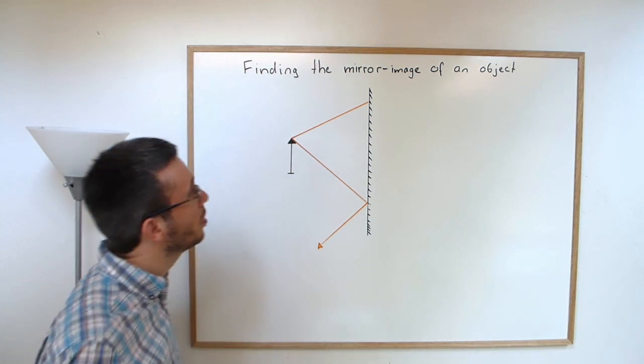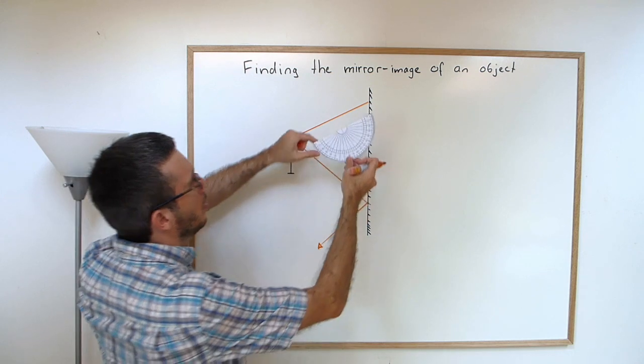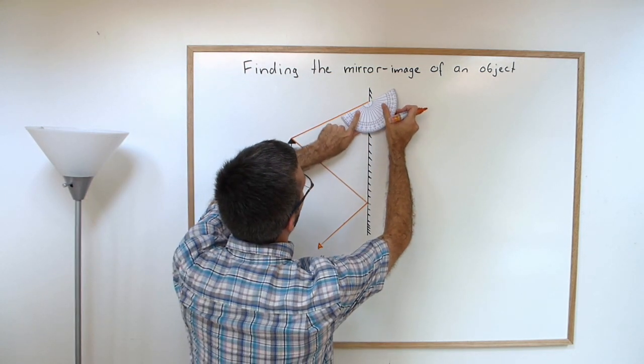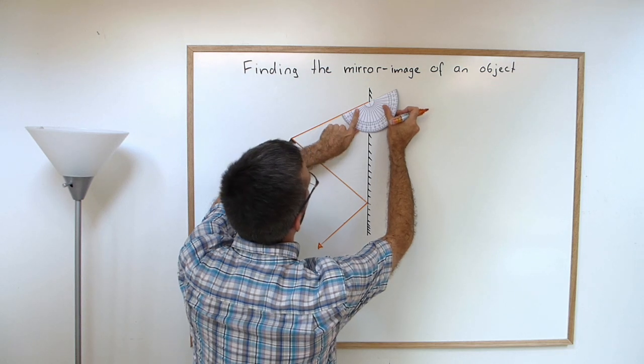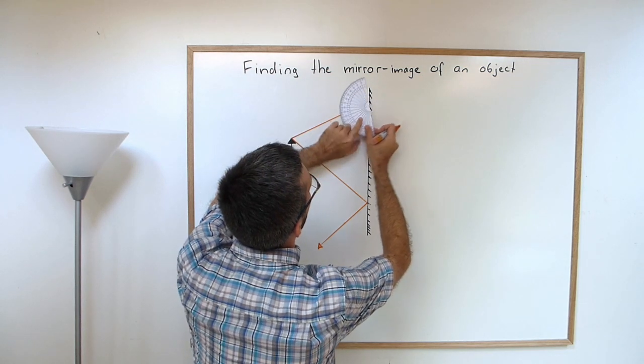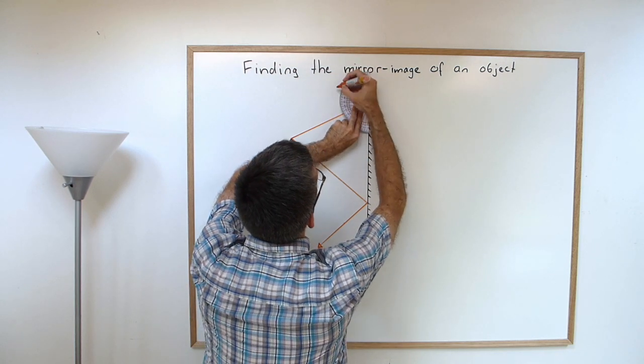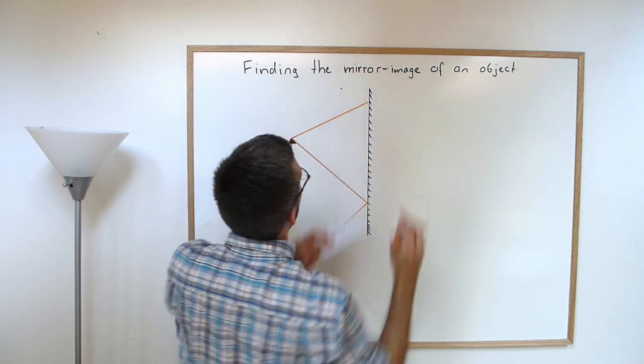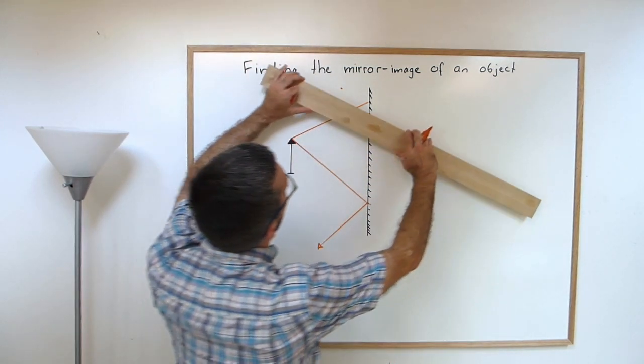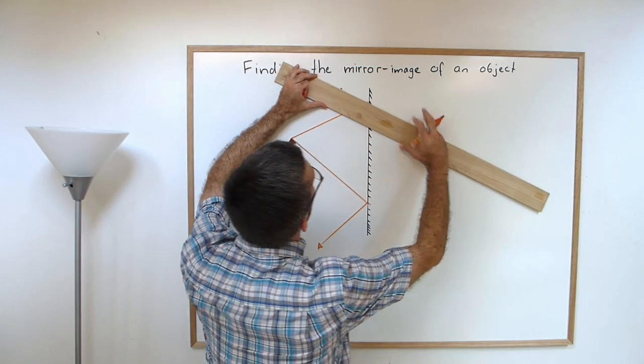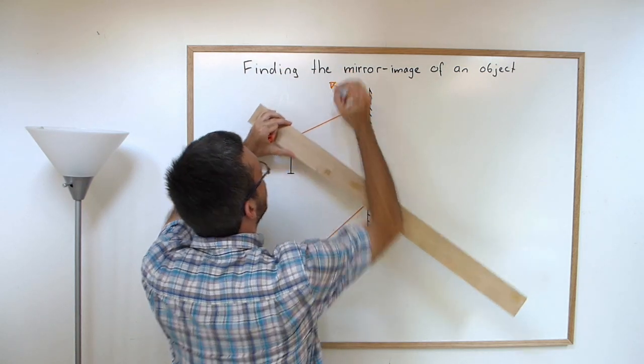And I'm repeating the same thing for my ray on the top. 65-ish degrees. 65-ish degrees is here.